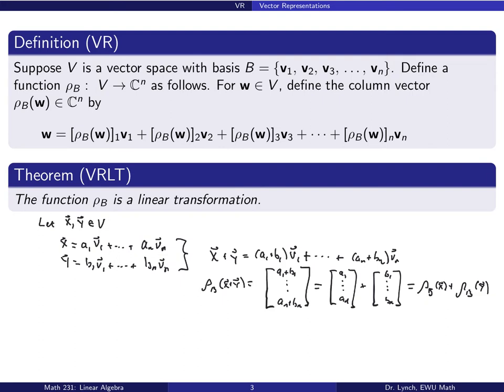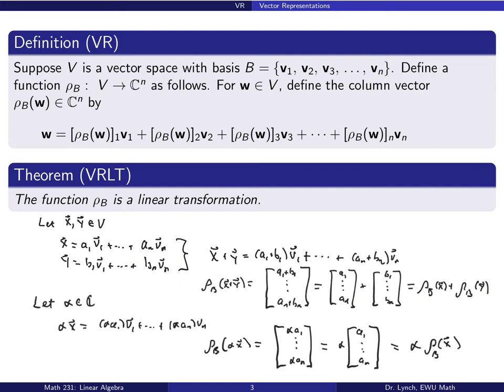Scalar multiplication works similarly. Since αx = α·a₁v₁ + … + α·aₙvₙ, the vector representation of αx relative to basis b is (αa₁, …, αaₙ)ᵀ, which equals α times (a₁, …, aₙ)ᵀ — that is, α times the vector representation of x. So ρ_b is linear.